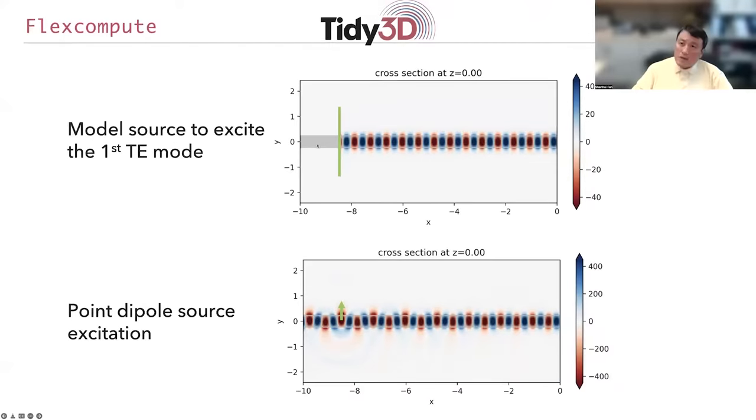Now you can contrast the behavior of the modal source with that of a dipole source. So if you just put a dipole into the waveguide, you see quite a bit different in the field distribution.